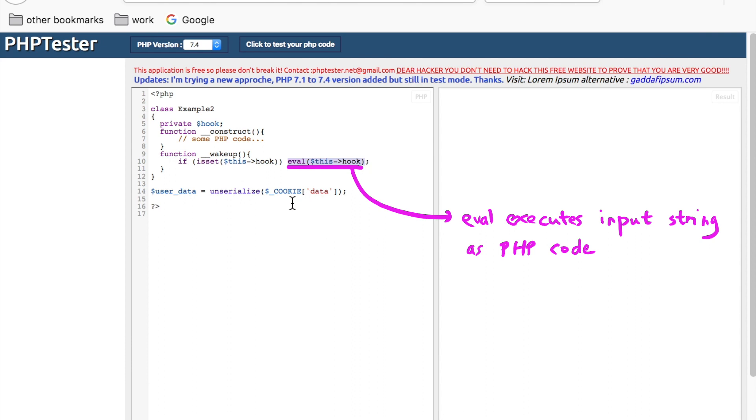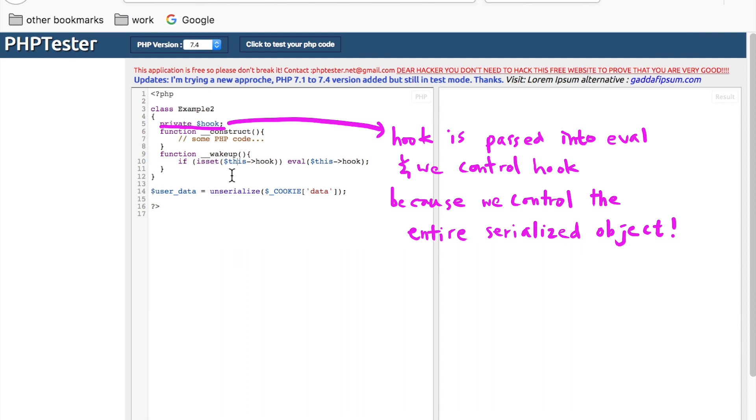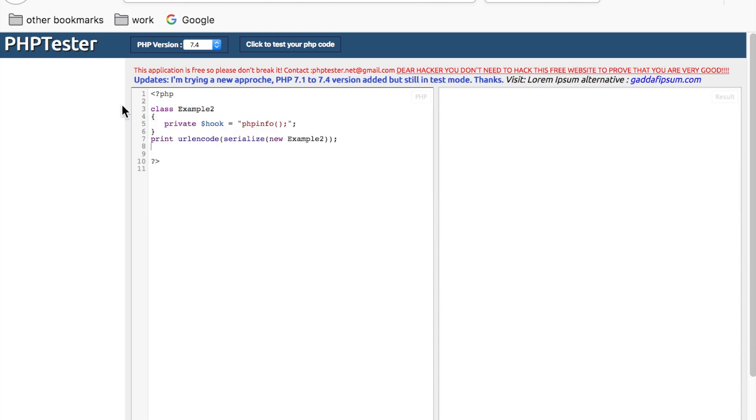To exploit this RCE, you simply have to set your data cookie to a serialized example2 object with the hook property set to whatever PHP code you want. You can generate the serialized object using this piece of code. We need to use URL encoding here since we are injecting the object via URL. Passing this string into the data cookie will cause the code PHP info to be executed.